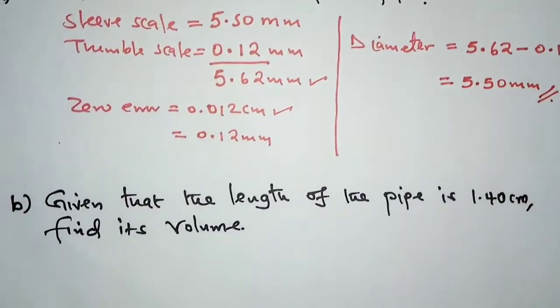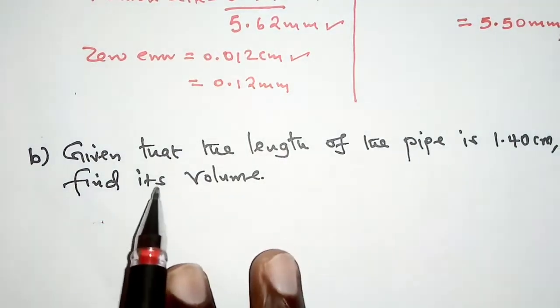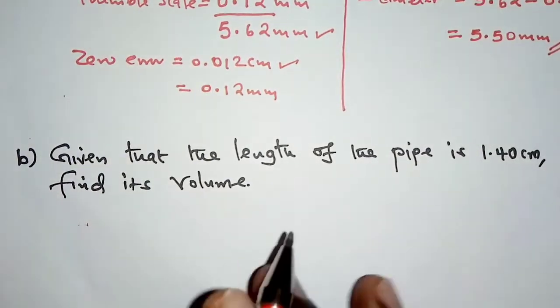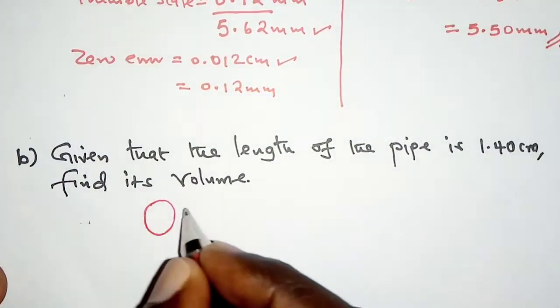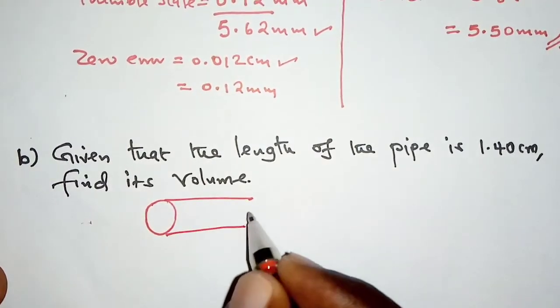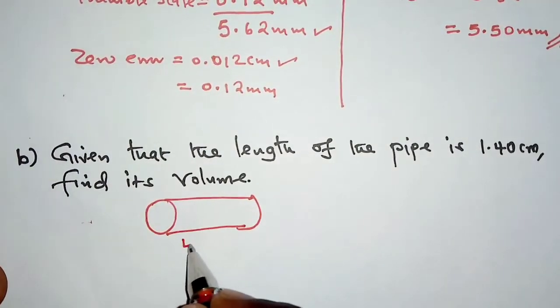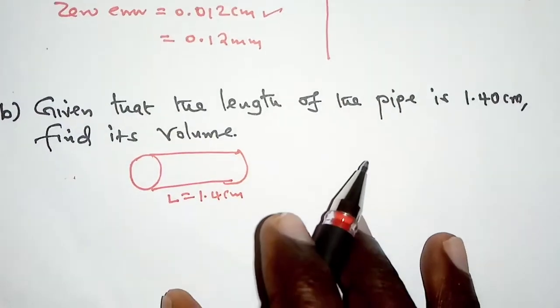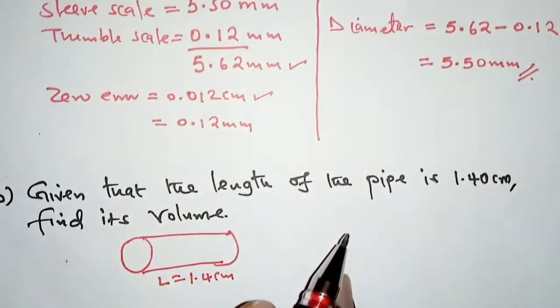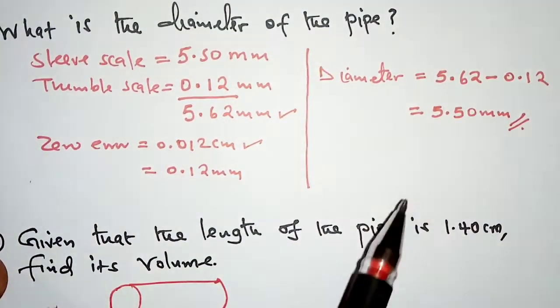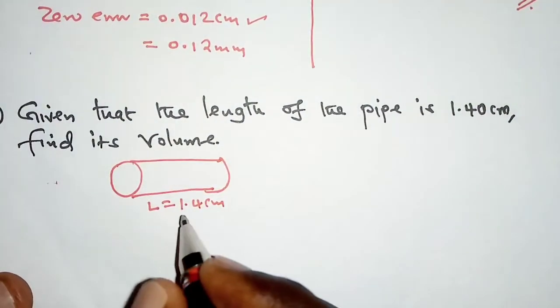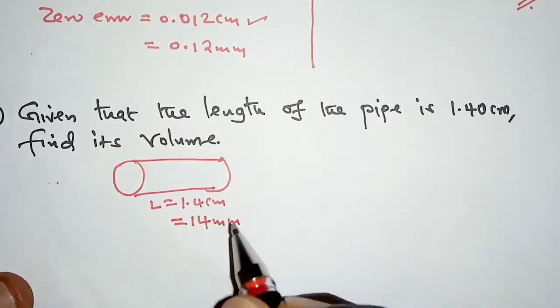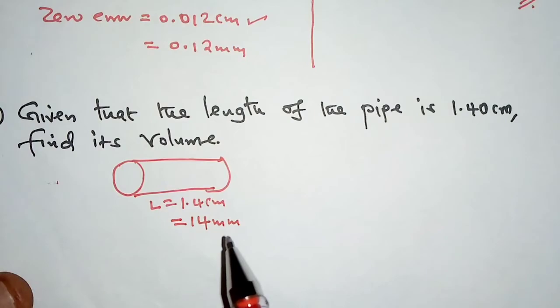Let's move to part B. Given that the length of the pipe is 1.40 centimeters, find its volume. We know that a pipe is cylindrical in nature, and the length is 1.4 centimeters. We need to convert this to millimeters to match the units we had earlier. 1.4 centimeters is equivalent to 14 millimeters.